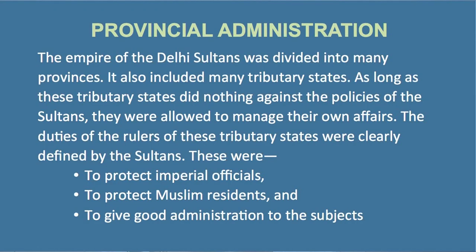The empire of the Delhi Sultans was divided into many provinces, which also included many tributary states. As long as these tributary states did not take any action against the policies of the Sultans, they were allowed to manage their own affairs. The duties of the rulers of these tributary states were clearly defined: to protect imperial officials, to protect Muslim residents, and to give good administration to their subjects.